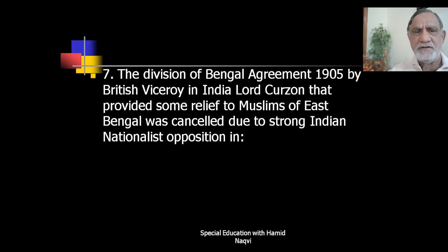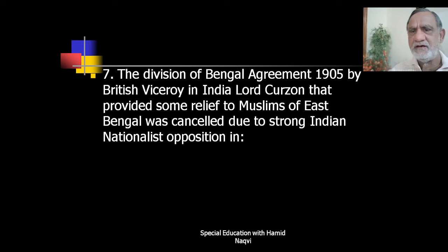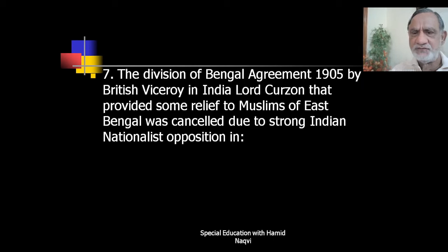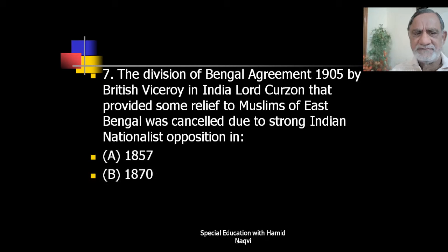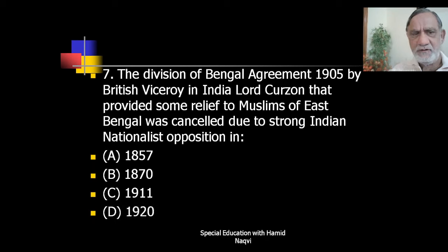Next: the Division of Bengal Agreement 1905 by British Viceroy Lord Curzon, that provided some relief to Muslims of East Bengal, was cancelled due to strong Indian nationalist opposition in 1857, 1870, 1911, or 1920. The correct answer is C — 1911.